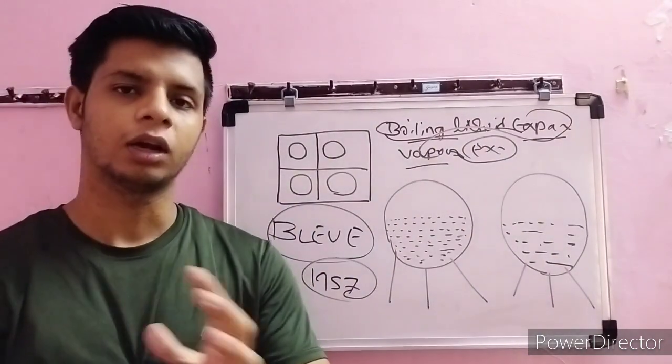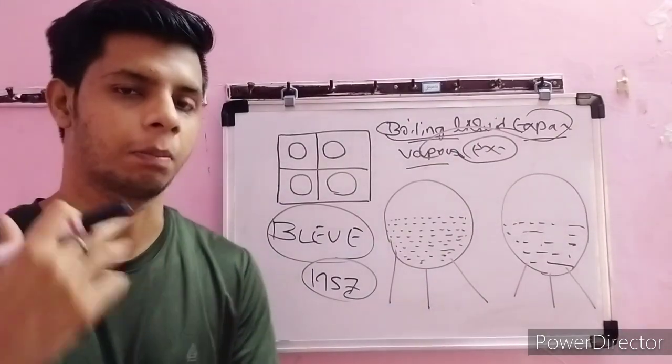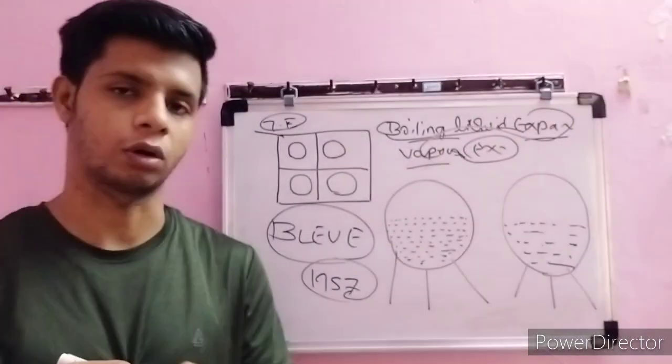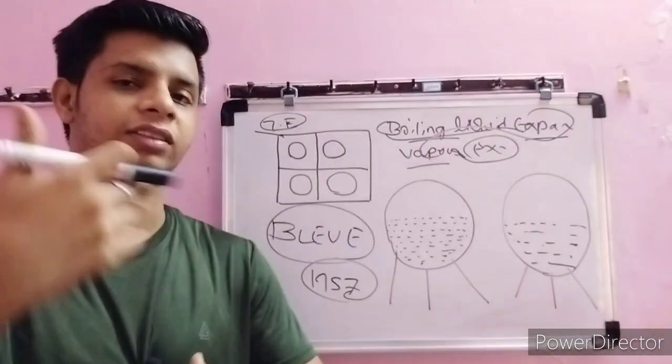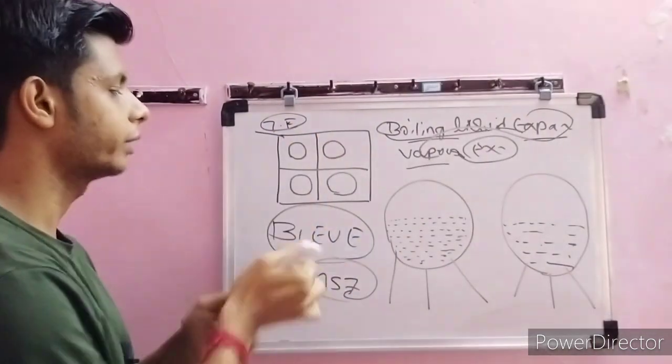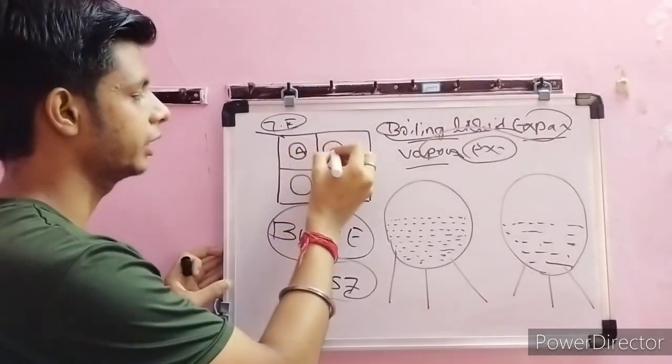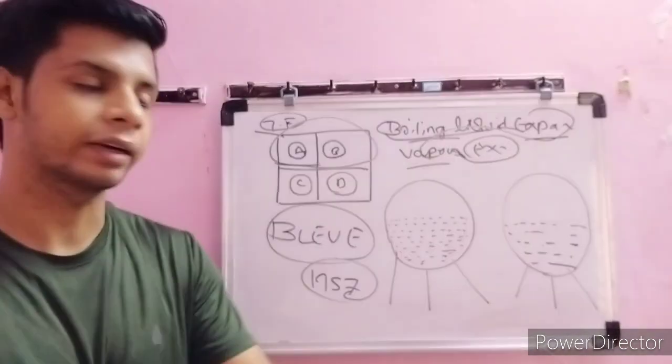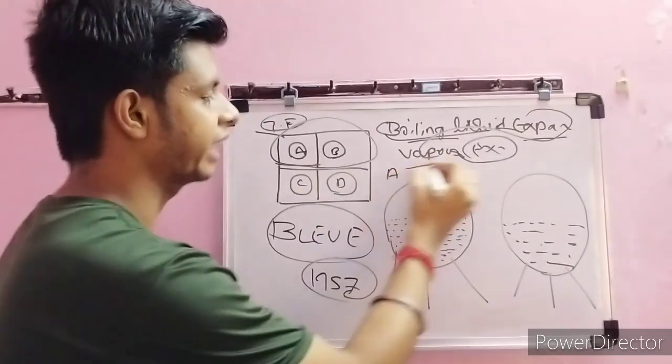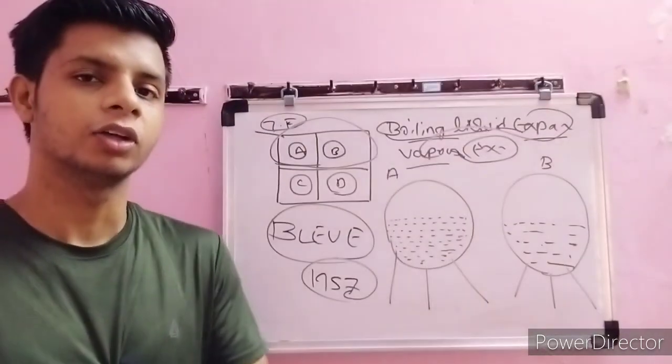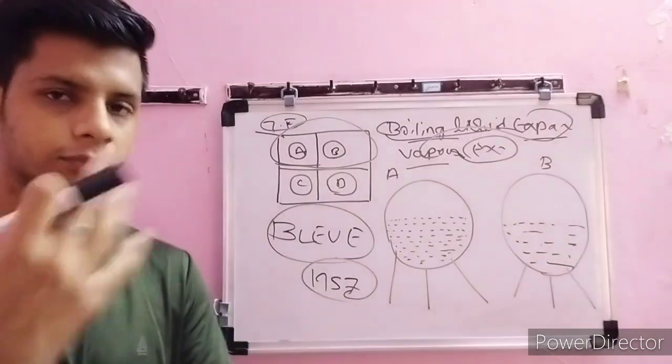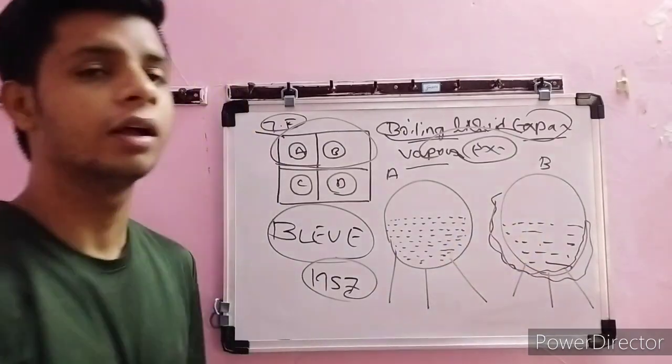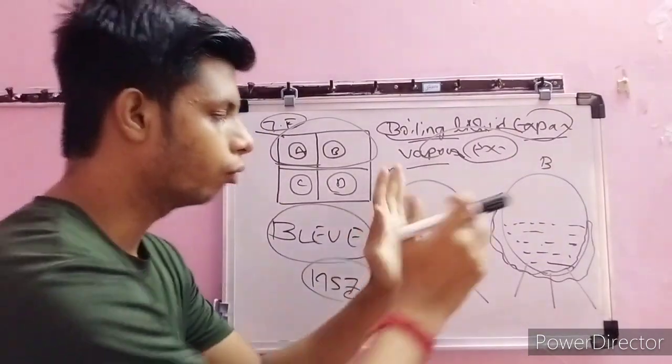Let's understand this through a practical example. Here I have made one tank farm where tanks are installed or stored. In this tank farm, we have four tanks: A, B, C, and D. In our case, we're taking tank number A and tank number B. Anyhow, tank number B catches fire.